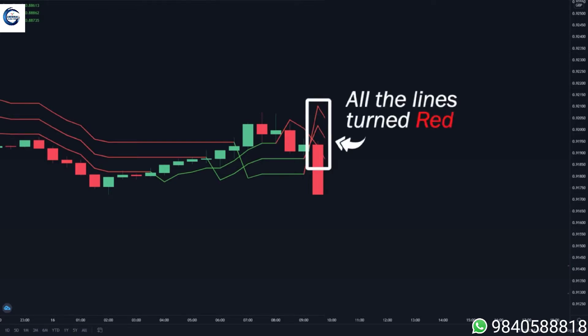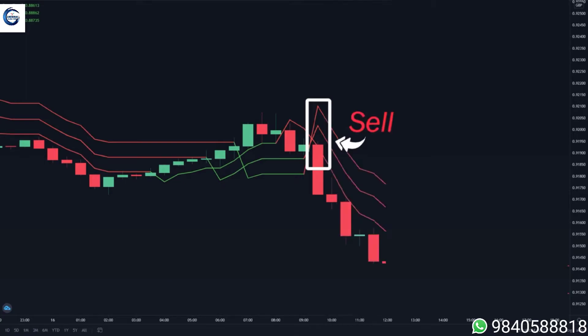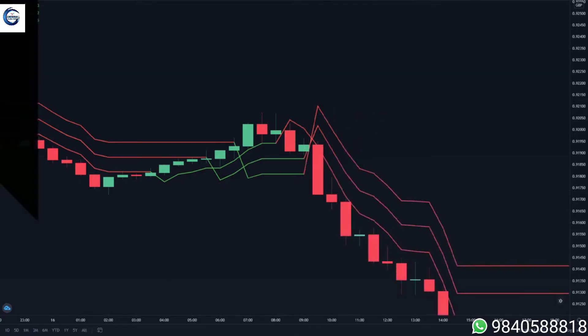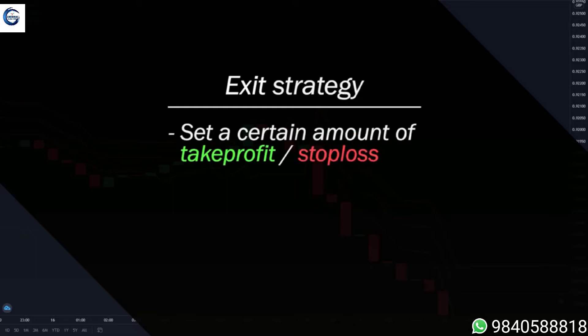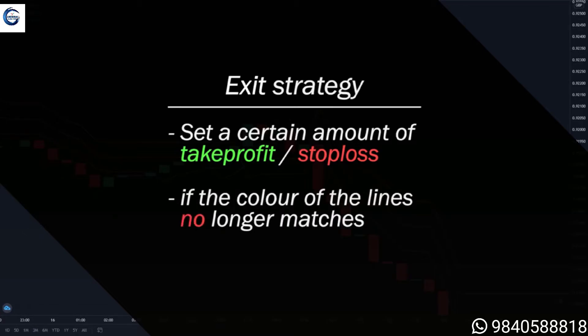For our exit signal there are actually a lot of ways you can do this. The first one is to set a take profit or stop loss, so you close your position if your trade reaches a certain amount of profit or loss. Another way is if the color of the lines no longer matches.